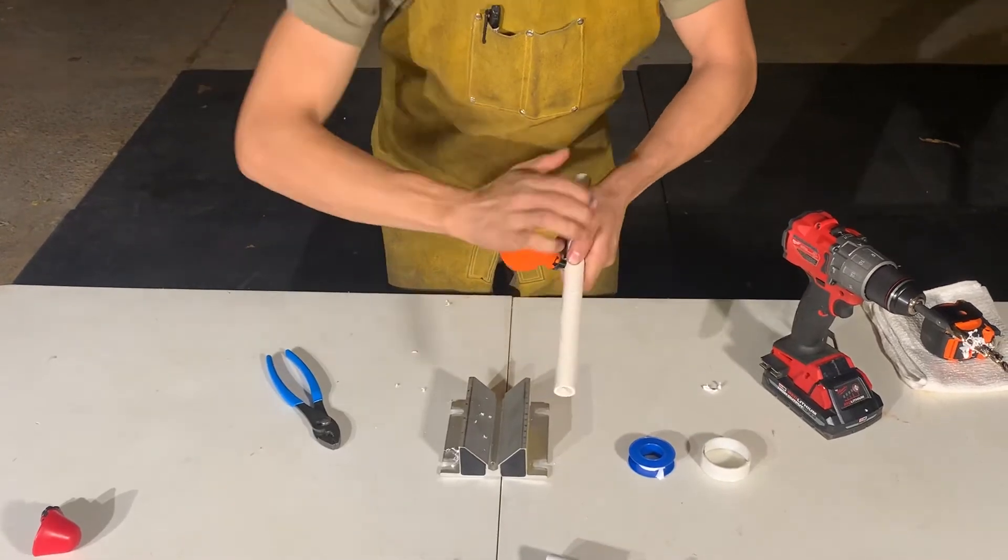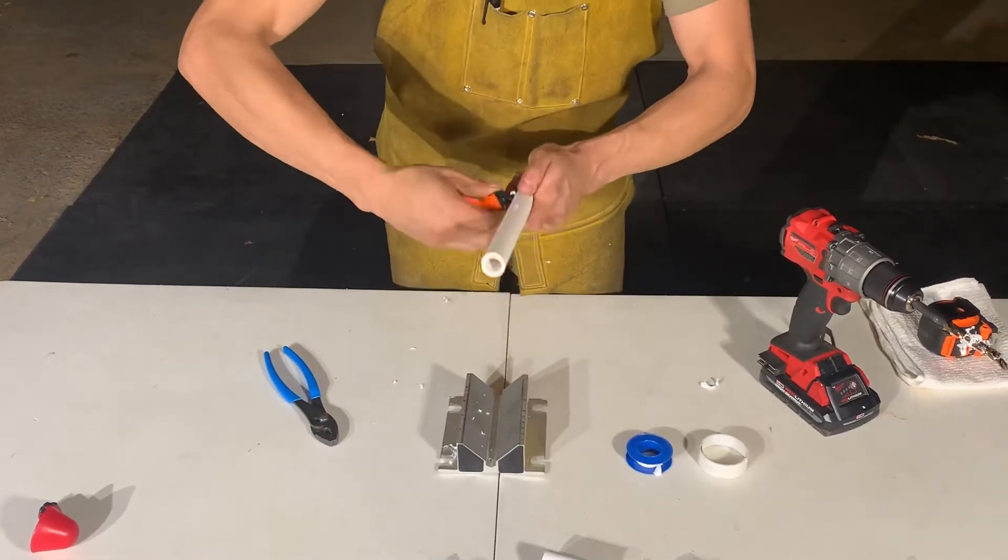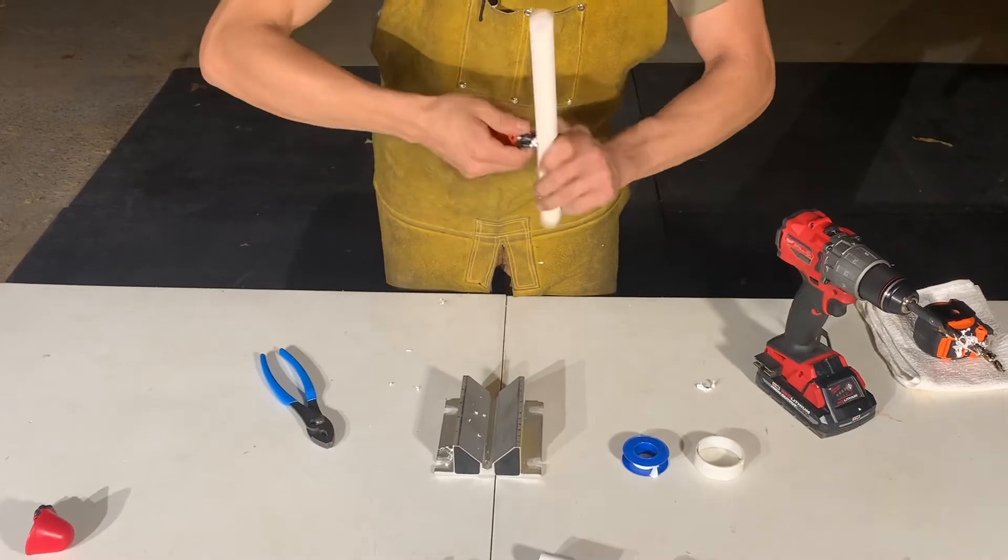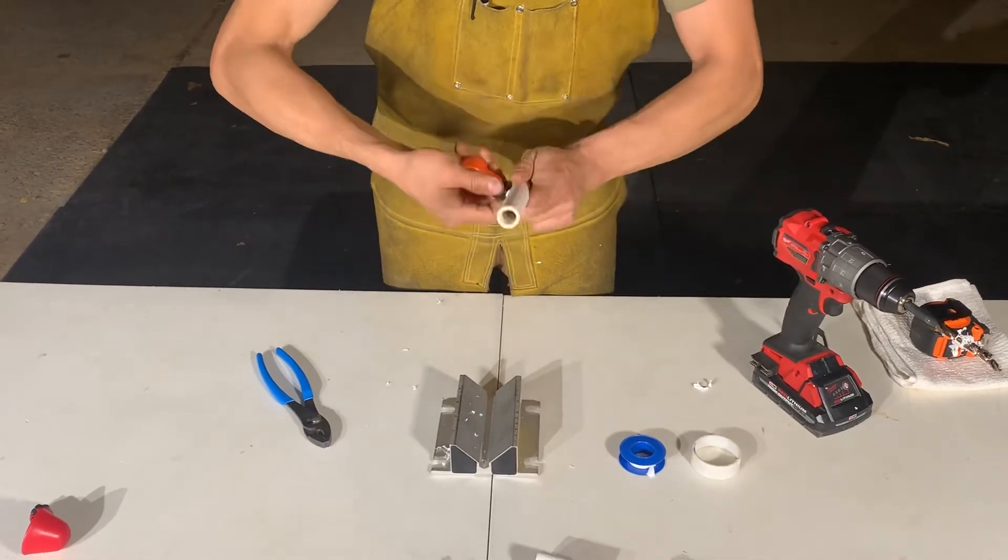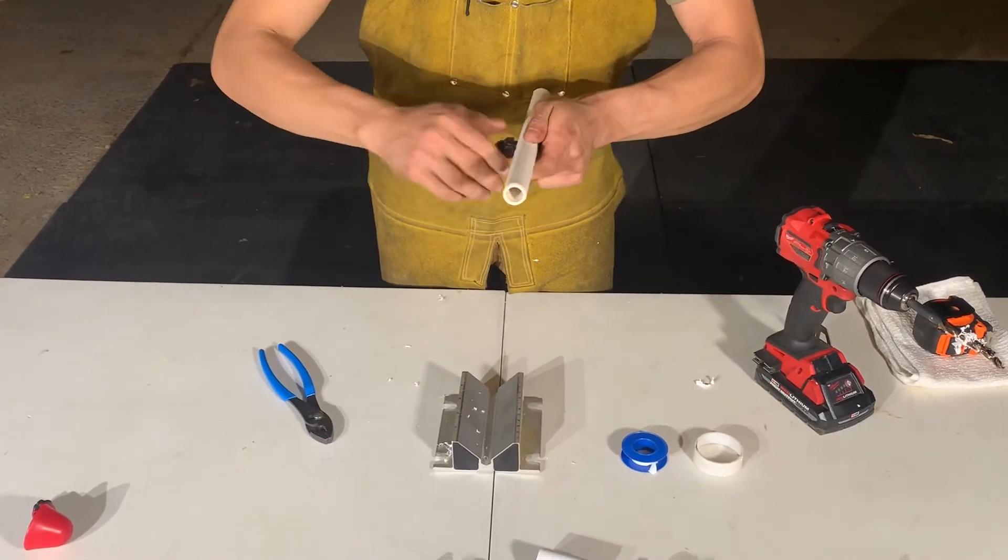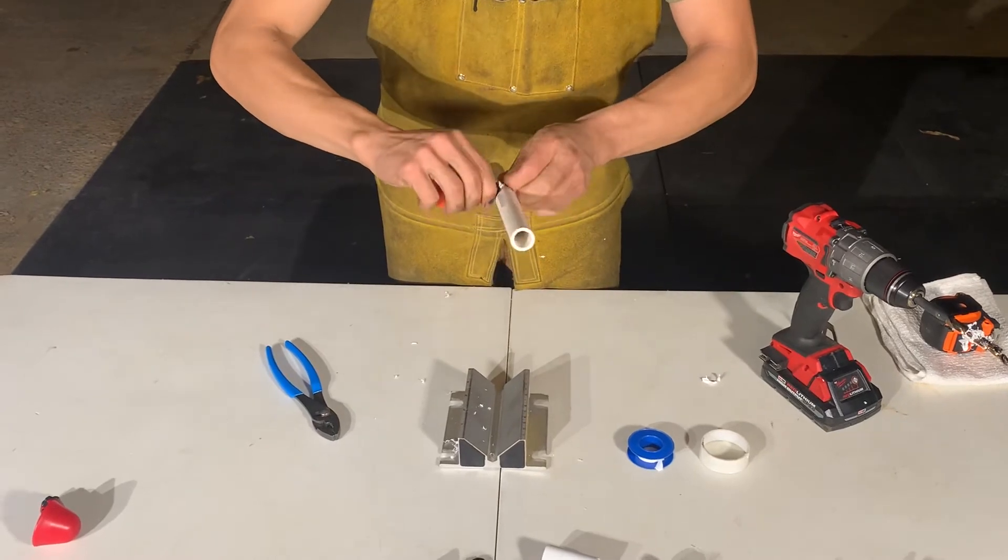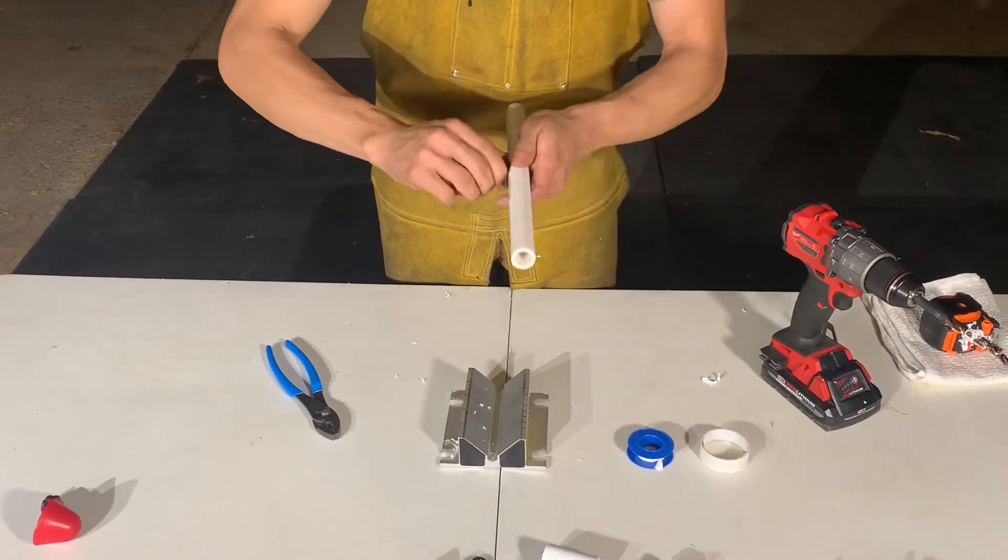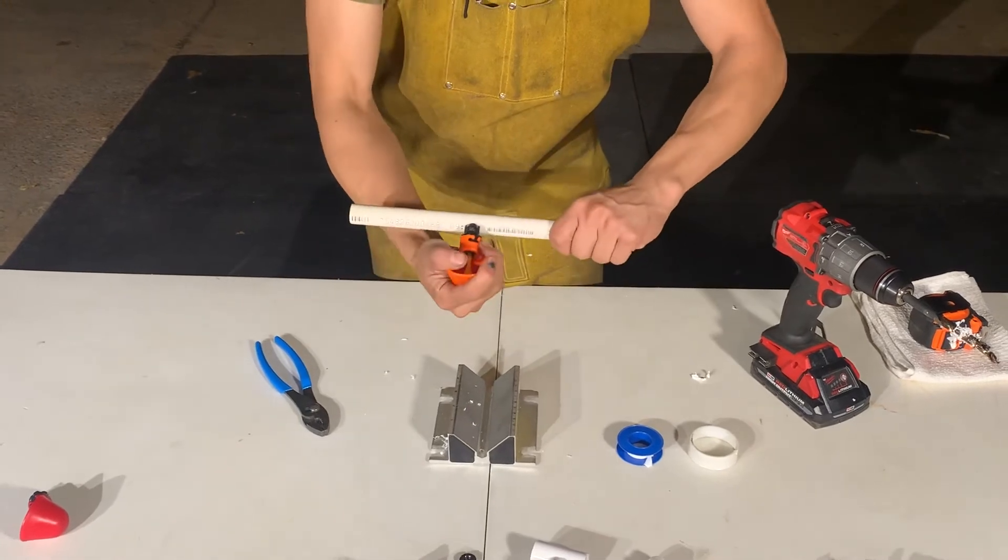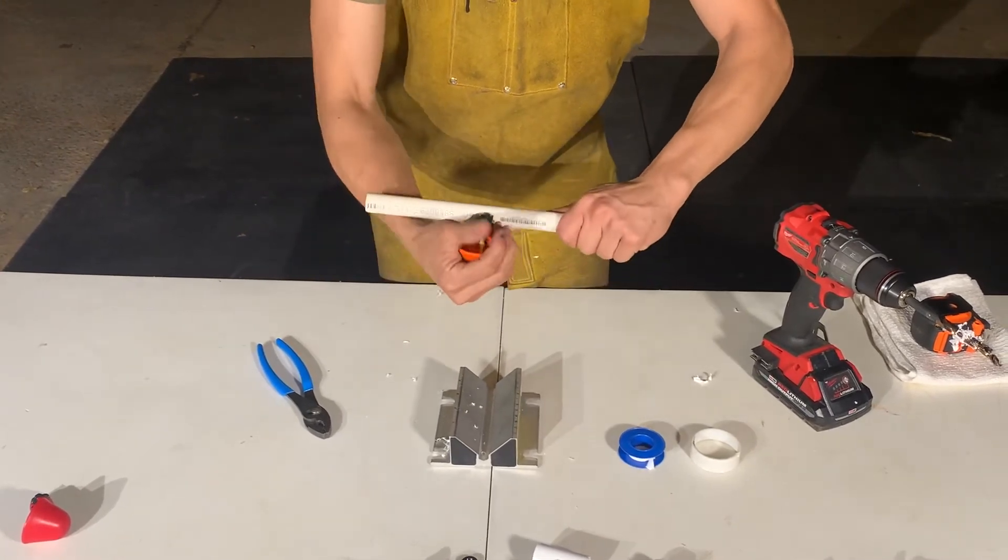You're going to want to just apply a little bit of force pushing against the PVC pipe. But other than that, get this excess plastic out of this. All right. And now, just get this straight. Now it's installed.